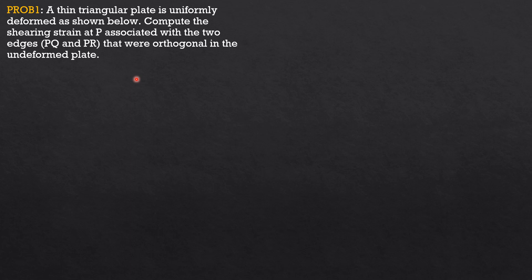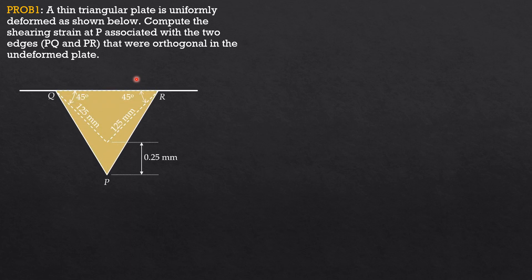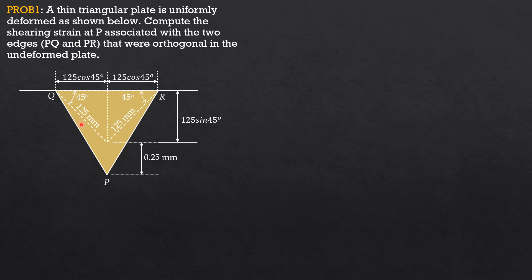The shearing strain by angular deformation is the total angular deformation at P. P was here and we have an additional deformation of 0.25 mm. Because the angle here is 90 degrees, this is a right triangle with vertical and horizontal lines. The hypotenuse is 125 cosine of 45 degrees, and the vertical distance is 125 sine of 45 degrees. If we call this angle theta, the total angular deformation or shearing strain would be 2 theta.